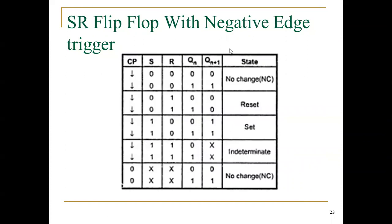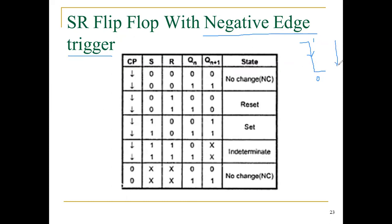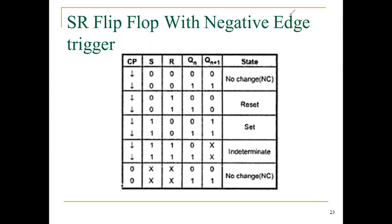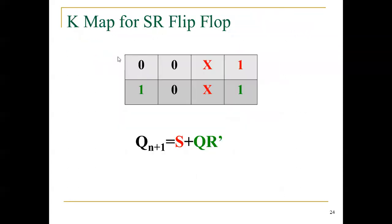For negative edge triggering, the operation is the same but the output changes only at the one-to-zero transition of the clock pulse — indicated by a down-arrow. The zero-to-one transition is positive edge triggering; the one-to-zero transition is negative edge triggering. The same outputs are possible, but changes occur only at the negative edge.